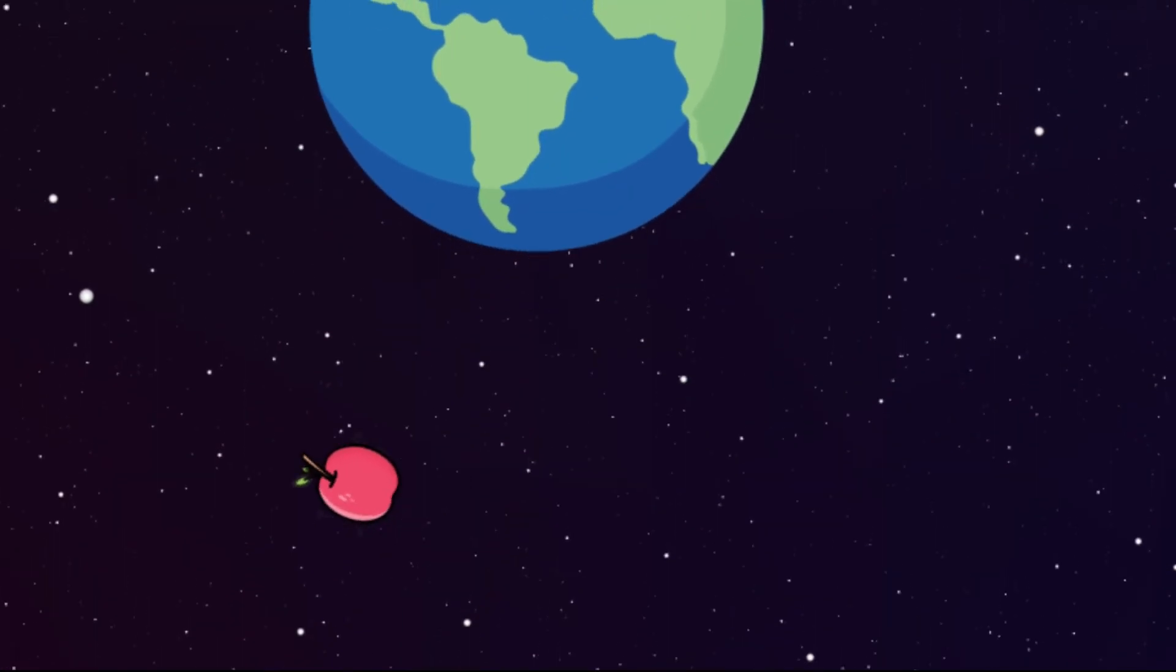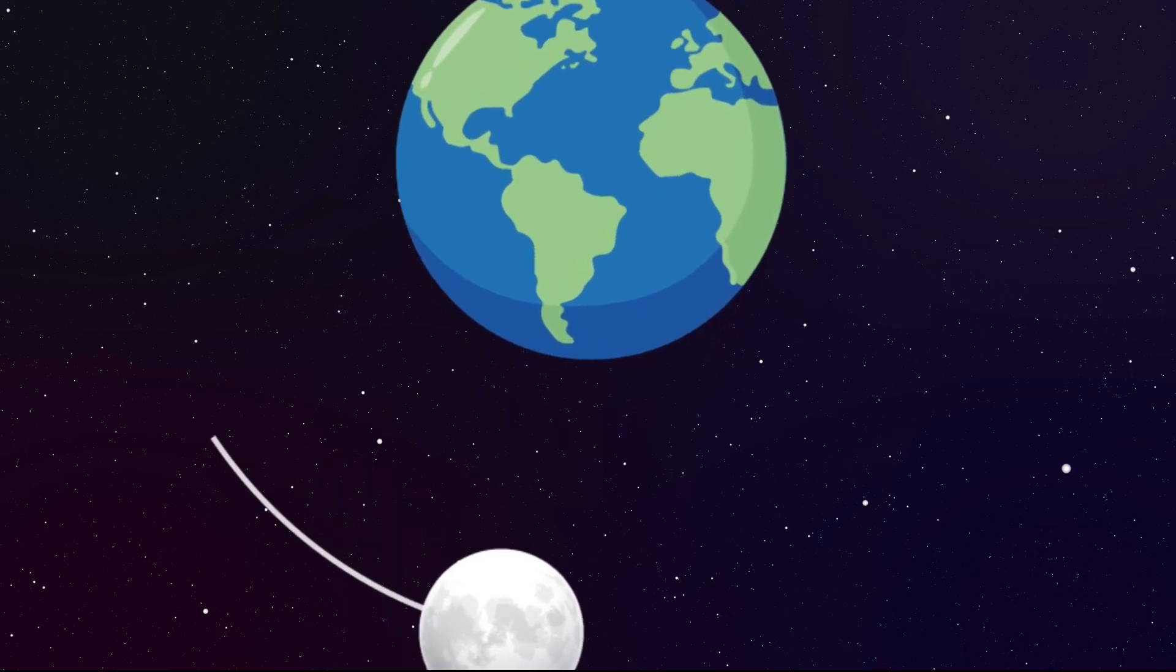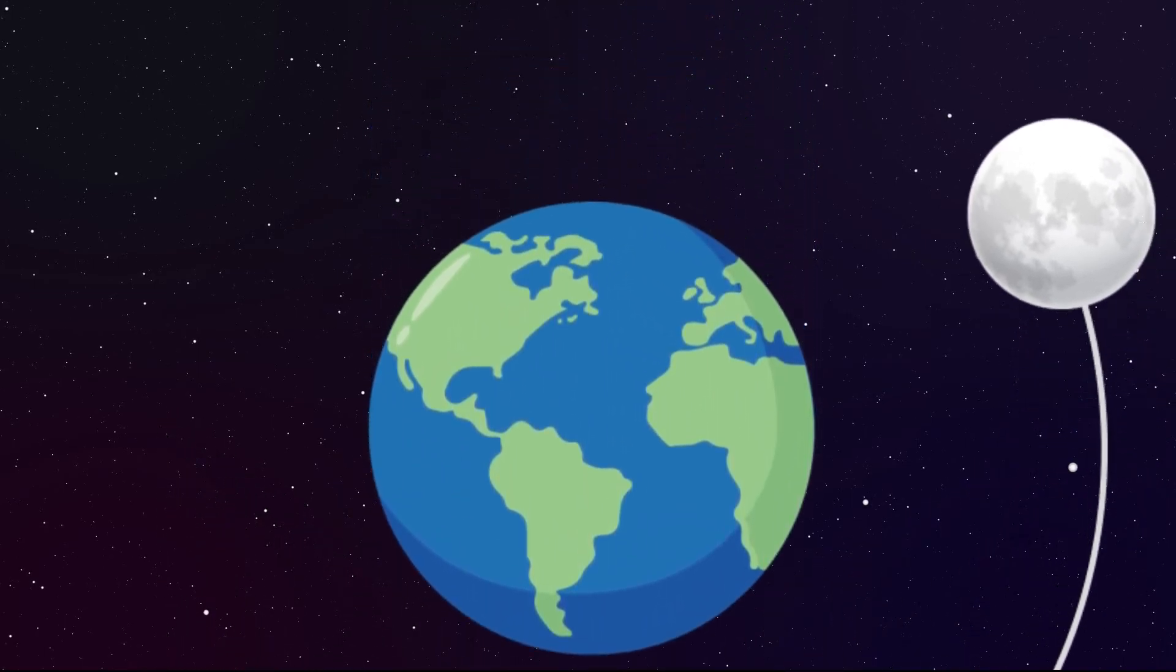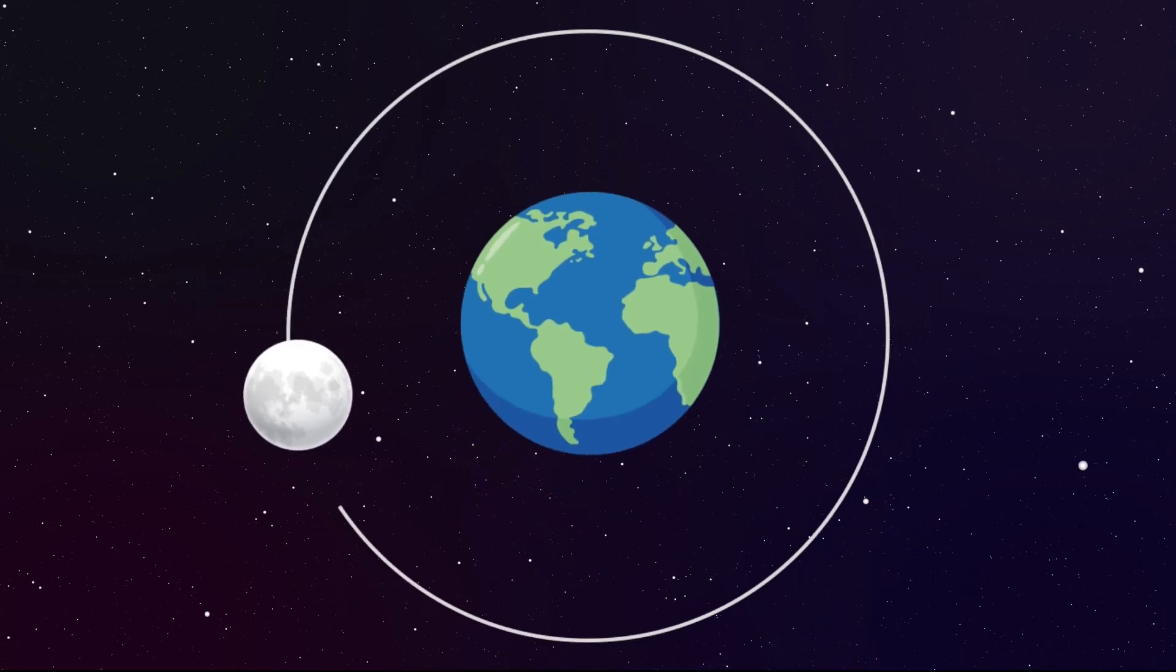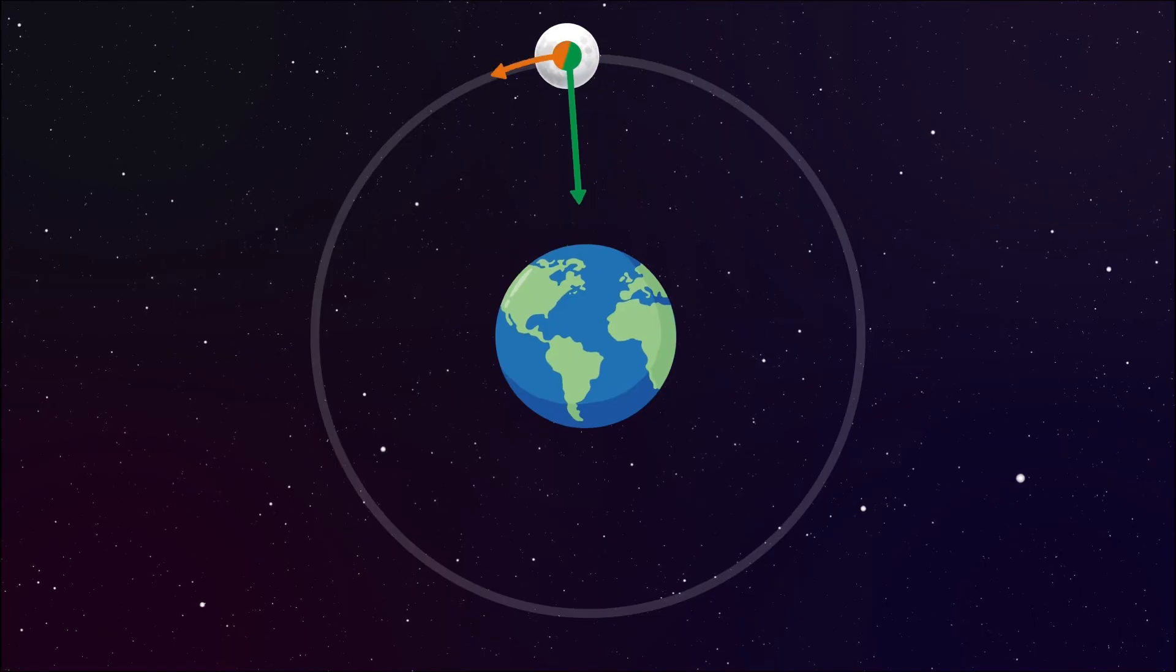And therefore the cannonball would always stay at the same height above the ground. It will go on circling around the earth along a fixed circular orbit, just like the moon. Therefore, the moon is falling down to earth, but just like the cannonball with large speed, it goes circling around the earth rather than coming crashing onto the earth.